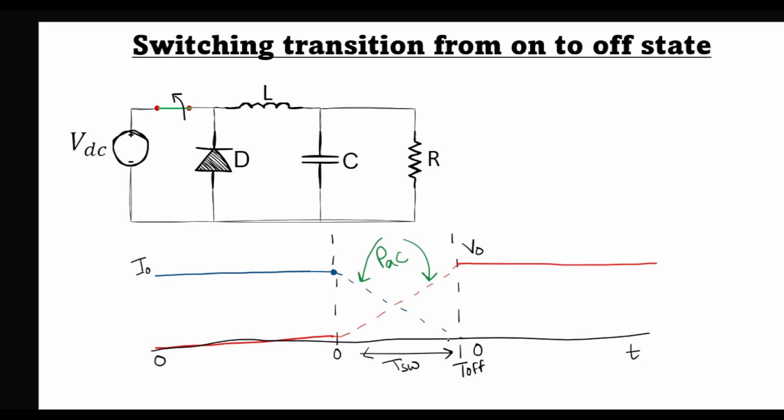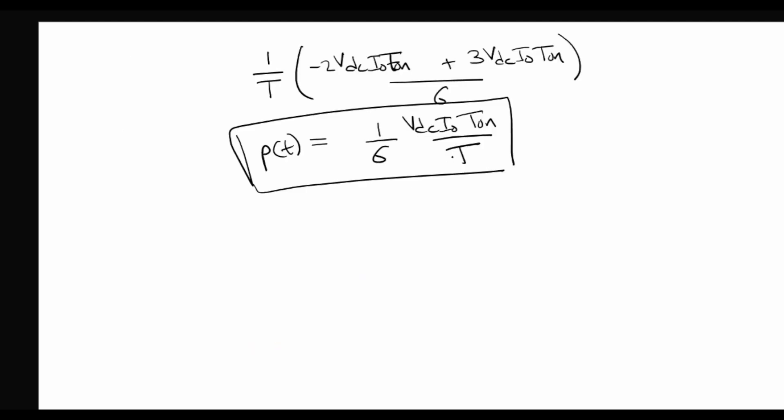A complete switching cycle will include transition from off to on as well as from on to off. Therefore, in the total AC switching loss, we will add this term again: 1 by 6 VDC I0 times T off over T.